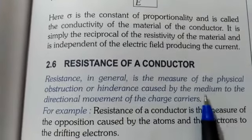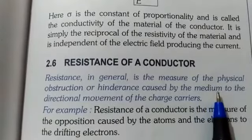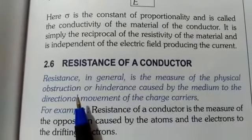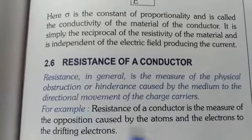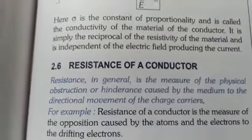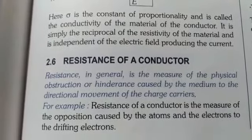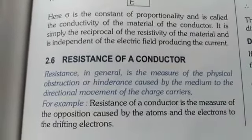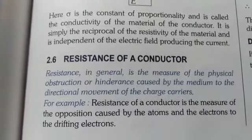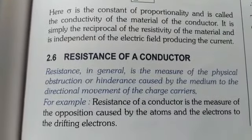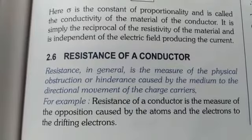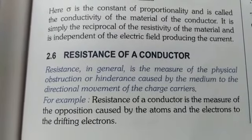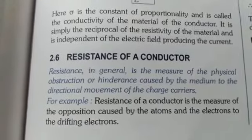What is the medium here? The medium here is a conductor. And what is physical obstruction? Physical obstruction is the opposition caused by the particles present in the conductor. All conductors are made of some particles. These particles physically oppose the flow of electrons, and that is why they oppose the flow of current. That phenomenon of opposition to the flow of current is called resistance.